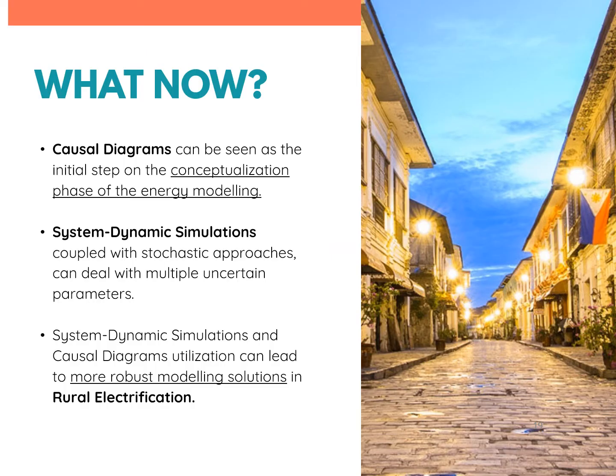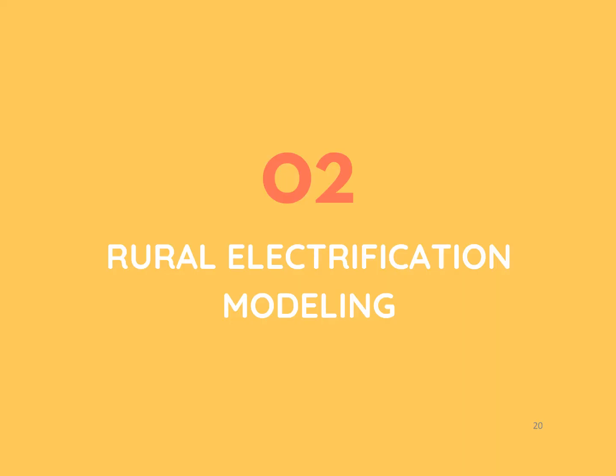We now know that the rural electricity development nexus is dynamic and complex. Nevertheless, causal diagrams can be used as the initial step in the conceptualization phase of energy modeling, and system dynamic simulations can deal with the multiple uncertain parameters of the nexus, leading to a more reliable modeling solution in rural electrification. Now that we understand the nexus, let's proceed to modeling.